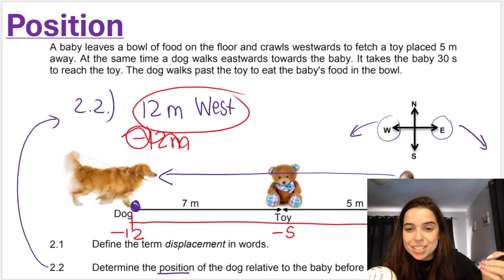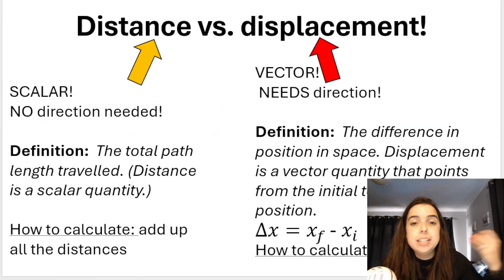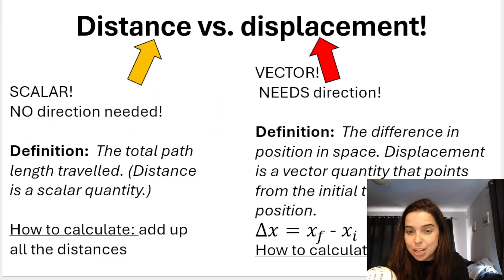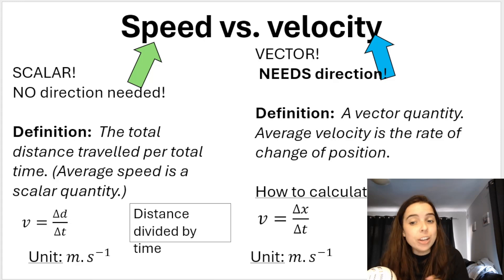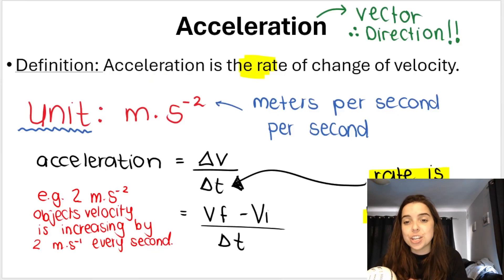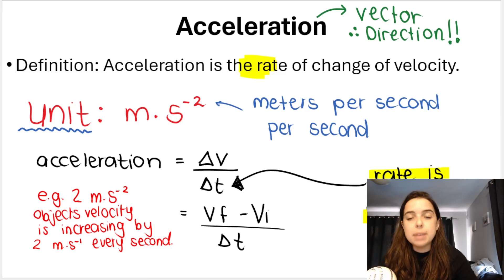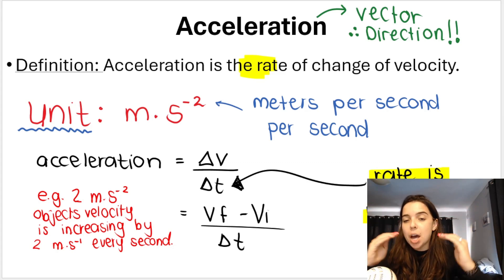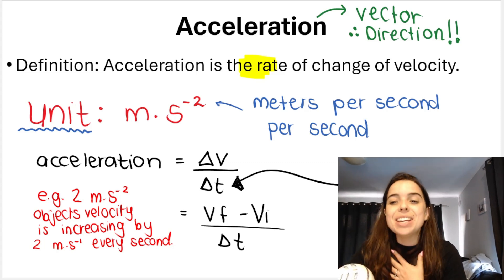It is very important to understand frame of reference and position because this leads into distance versus displacement, speed and velocity, and finally acceleration — and that concludes the motion in one dimension section. Make sure you understand this beginning part, then build up throughout the playlist to understand the rest. I can't wait to see you in another video very soon!